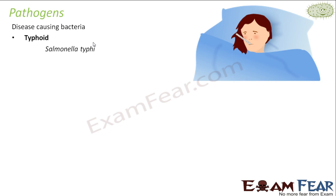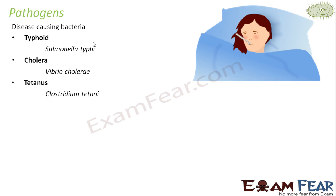Salmonella typhi is the binomial name of a specific bacteria — Salmonella denotes the genus and Salmonella typhi together denotes the species. For the same Salmonella genus you might have many different species. When this bacteria enters inside your body, your risk of suffering from typhoid increases. Cholera is caused by Vibrio cholerae — it mostly enters through contaminated food or water. Tetanus is caused by Clostridium tetani.